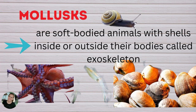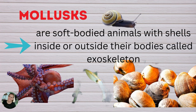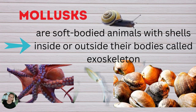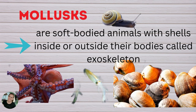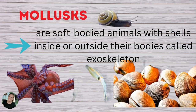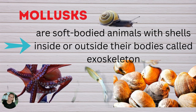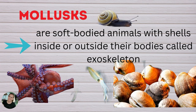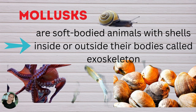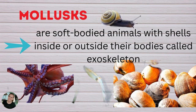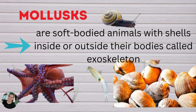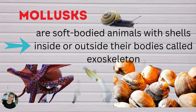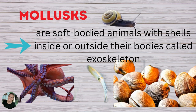The second group of invertebrates are molluscs. They are soft-bodied animals with shells inside or outside their bodies. Examples of these are snails, octopus, squid, and clams.